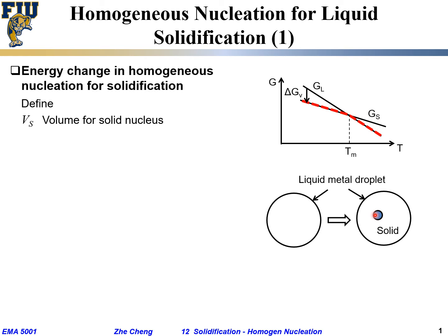We make a simple assumption: there is no volume change. This is not the case in general — for water, going from liquid to solid the volume actually expands a little; for most metals it shrinks a little. But for simplicity we assume the total volume is constant. So V total equals Vs plus Vl, and we treat it as a constant.